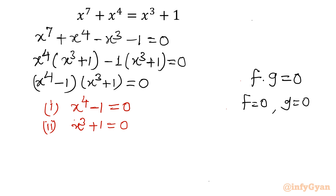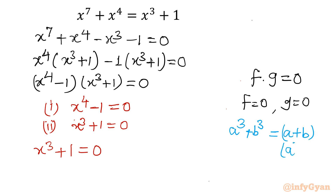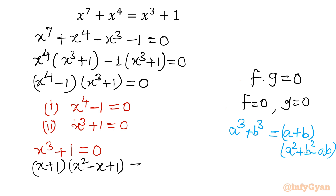Let me take the second equation first: x³ + 1 = 0. Using the algebraic identity for sum of cubes — a³ + b³ = (a + b)(a² - ab + b²) — our equation becomes (x + 1)(x² - x + 1) = 0. So either x + 1 = 0, or x² - x + 1 = 0.